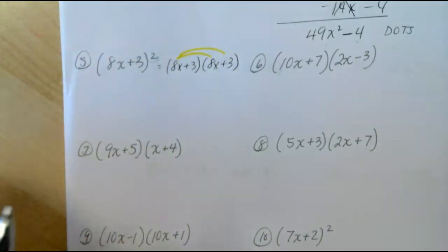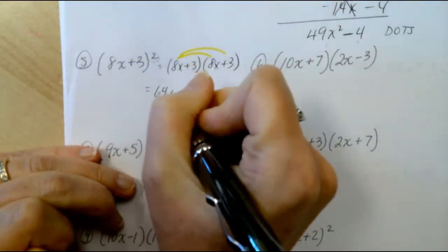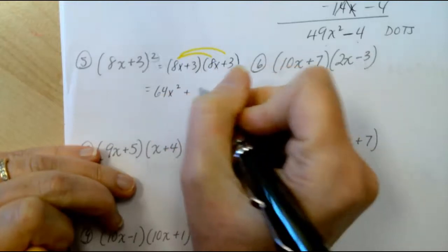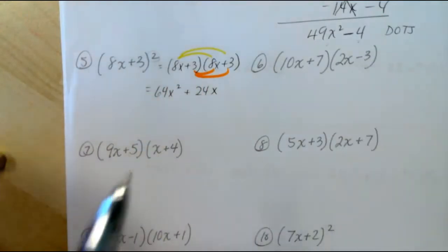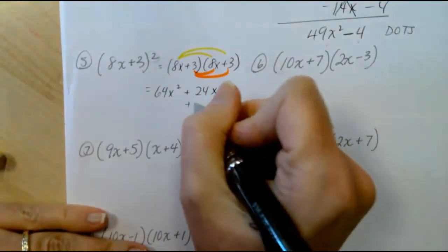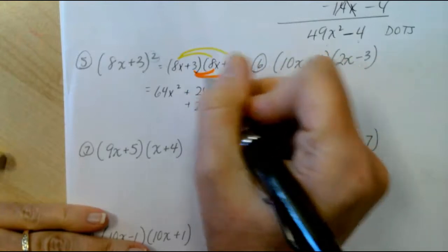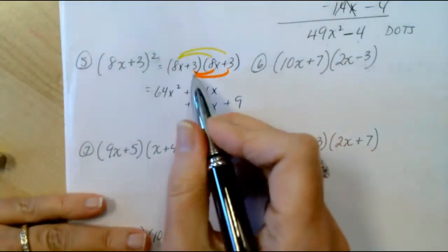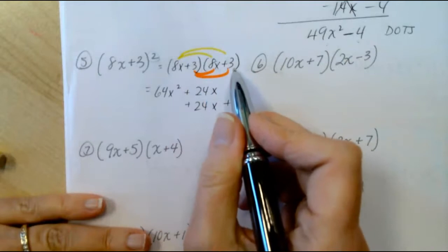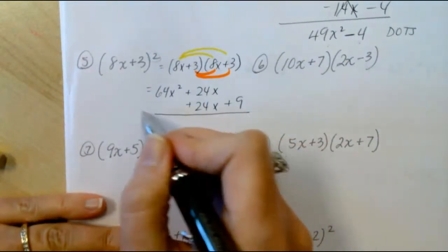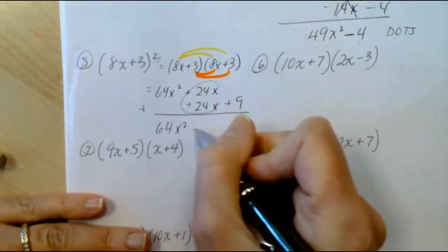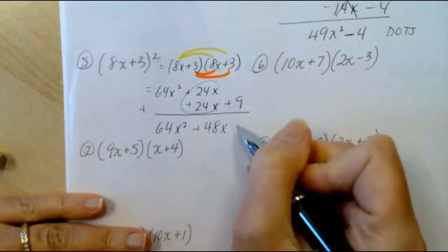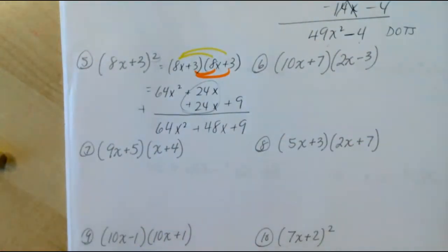That's going to give us 64x squared plus 24x. Next, we take the 3 through, and we have another 24x, and then 3 times 3 is 9. So these are the same binomials being multiplied to each other. This time, the middle terms do not cancel. They double, and we get 64x squared plus 48x plus 9. So that's a quick check on the front of this page.